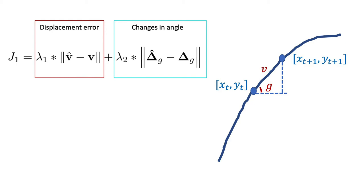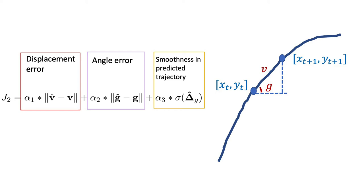The second model introduces a smoothing term for predicted trajectory based on the standard deviation over the change in slope angles.